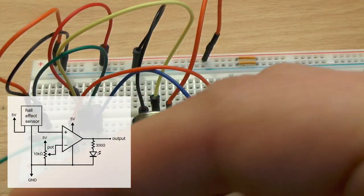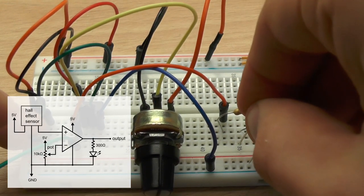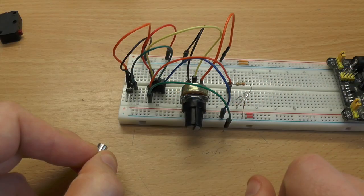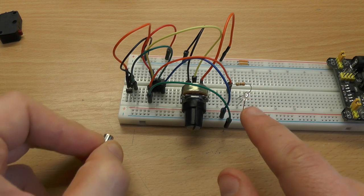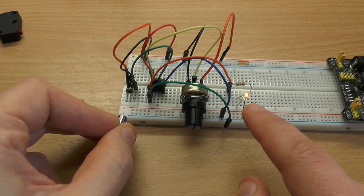You can just connect this to the output of the op amp using a current limiting resistor. And just connecting like this. Now when we reach our distance the LED will light up like this.